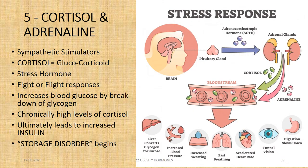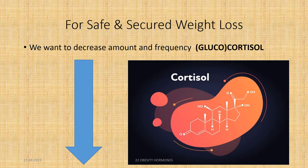The fifth important set of hormones are cortisol and adrenaline, which are sympathetic stimulators. Cortisol is a glucocorticoid — a stress hormone and the fight-or-flight response hormone of our body. It increases blood glucose by breakdown of glycogen. For safe and secured weight loss, we must aim to decrease the amount and frequency of cortisol glucocorticoid.